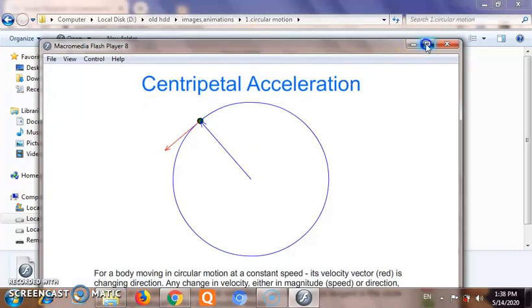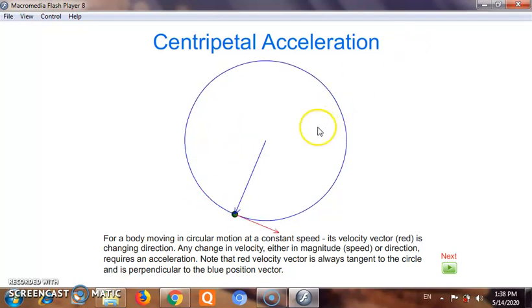Here on the screen we find that the particle is performing circular motion. That blue vector shows the radius vector and the red shows velocity vector. We actually find that the radius vector is perpendicular to velocity.